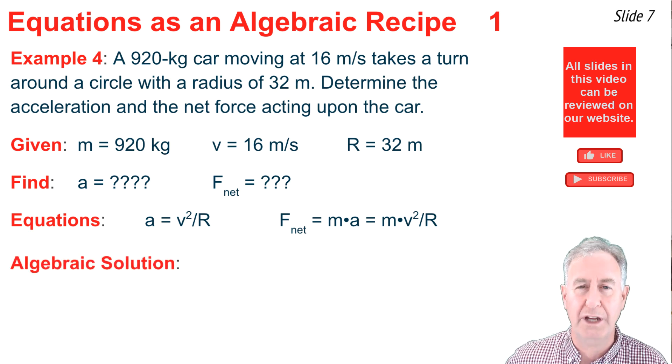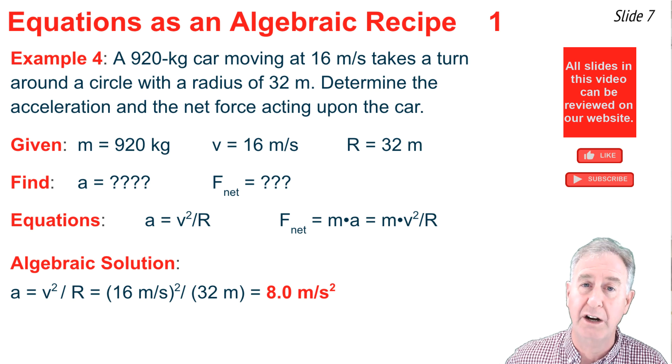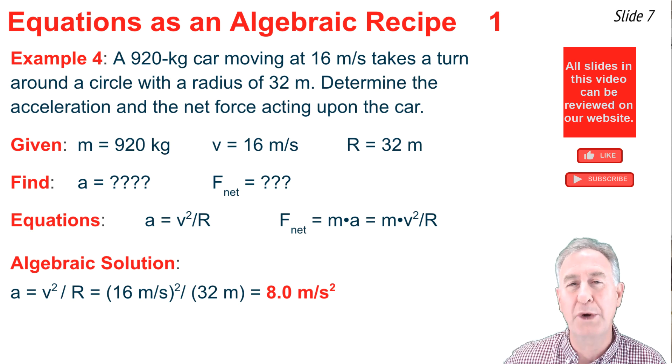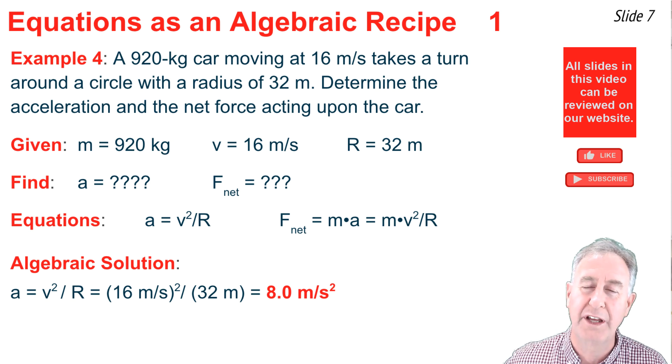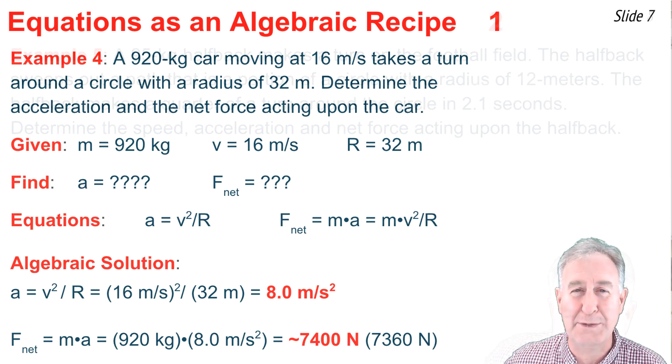In the solution for the acceleration, I'm going to say a equal the speed squared divided by the r, where the speed is 16, and the r is 32. When I do my math, I come out with 8.0 meters per second squared. Solving for the f net means I have to go f net equal m times a, or 920 kilograms times the acceleration of 8 meters per second squared. When I do the math, I get approximately 7400 newtons as my net force.